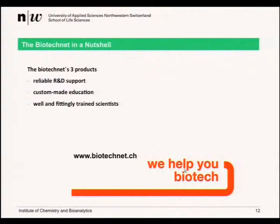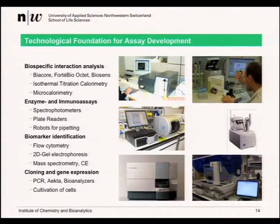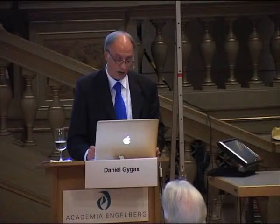To summarise in a nutshell: BiotechNet's products are reliable R&T support, custom-made education, and well and fittingly trained scientists. Now, going back to the research I do in my group — what we try to do to work in an industrial environment is to bring together competencies. It is a combination of different competencies. The technological foundation, which is extremely important: we have access to biospecific interaction analysis, enzyme immunoassay techniques, techniques for biomarker identification, and cloning and gene expression methods.